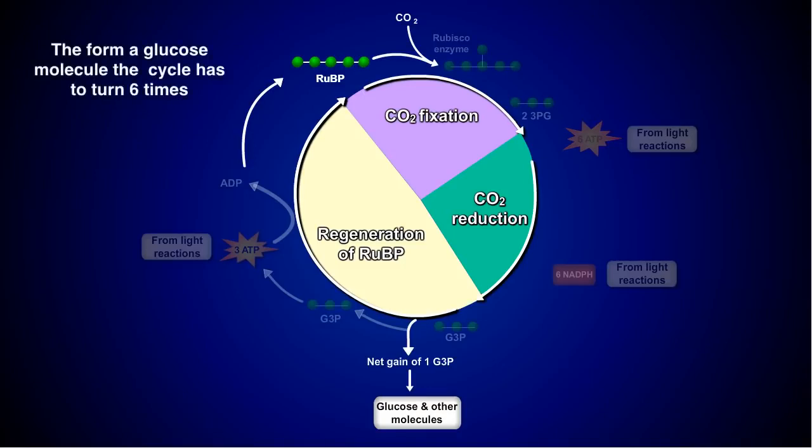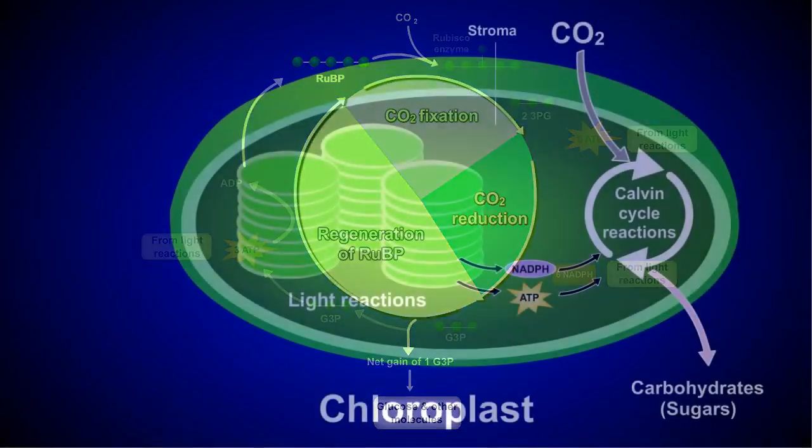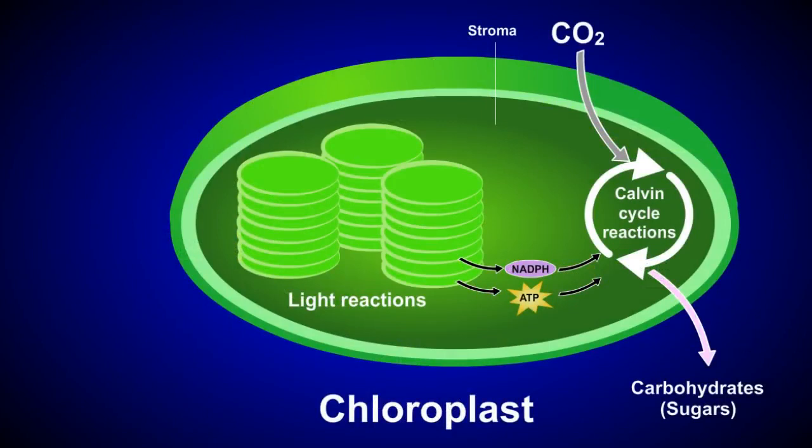To form a glucose molecule, the cycle actually has to turn six times, because each turn of the cycle adds only one carbon atom from the incoming carbon dioxide. It's important to remember that the Calvin cycle is dependent on the light reactions to provide NADPH and ATP, which in turn provide the electrons and energy needed to form carbohydrates.